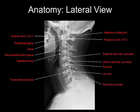The predental space, which is the space between the anterior arch of C1 and the dens, the intervertebral disc spaces, the vertebral bodies themselves, the transverse processes which project over the vertebral bodies, the spinous processes, the lamina, the pedicles, the inferior and superior articular processes, the atlanto-occipital joint, as well as the posterior arch of C1.